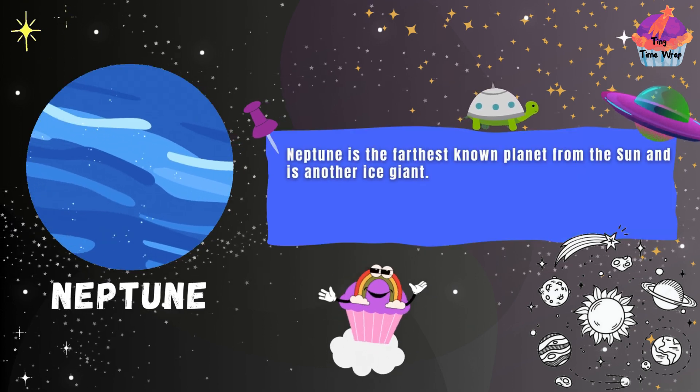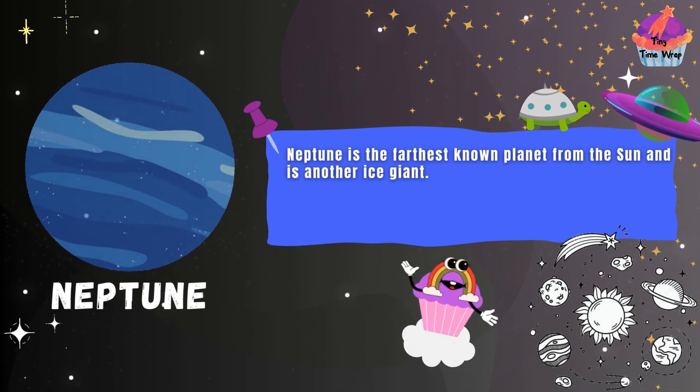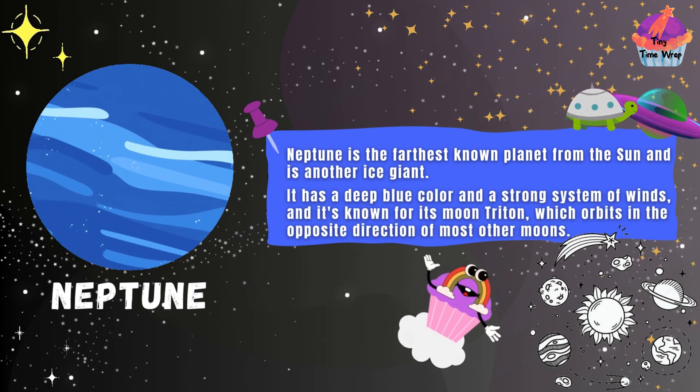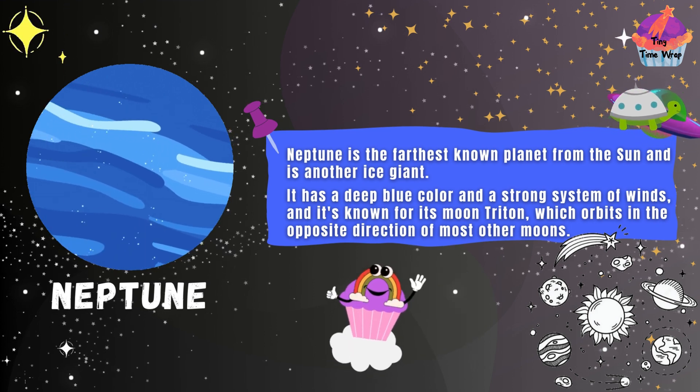Neptune is the farthest known planet from the sun and is another ice giant. It has a deep blue color and a strong system of winds, and it's known for its moon Triton, which orbits in the opposite direction of most other moons.